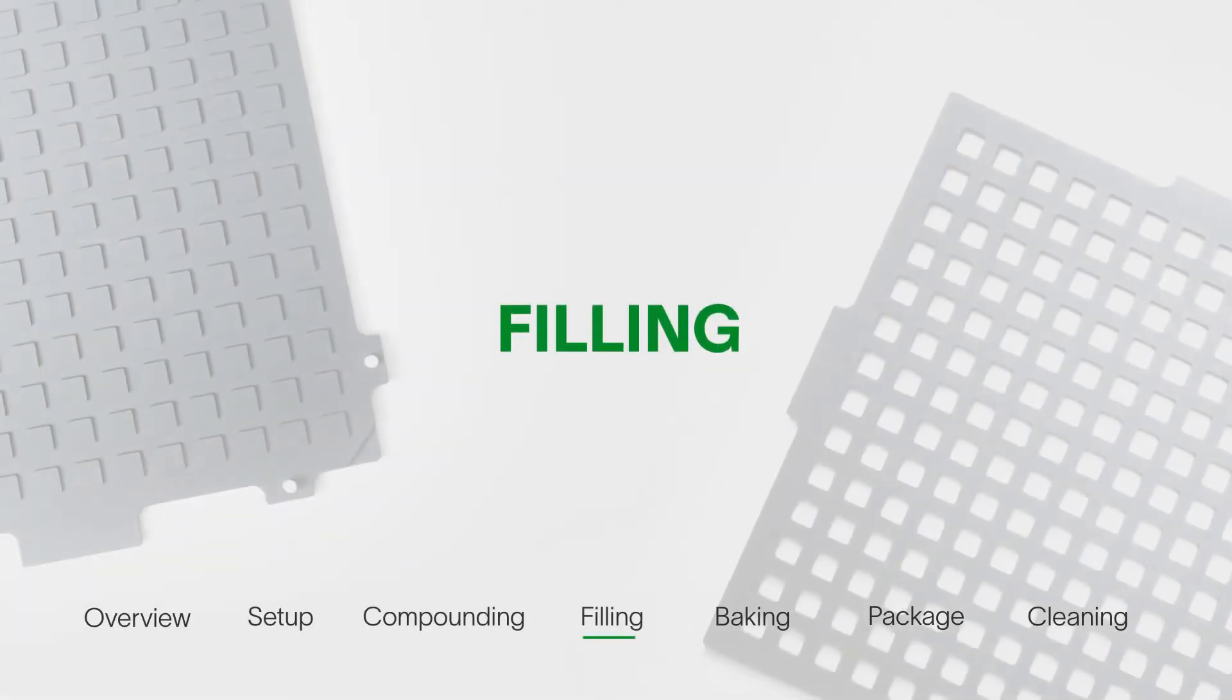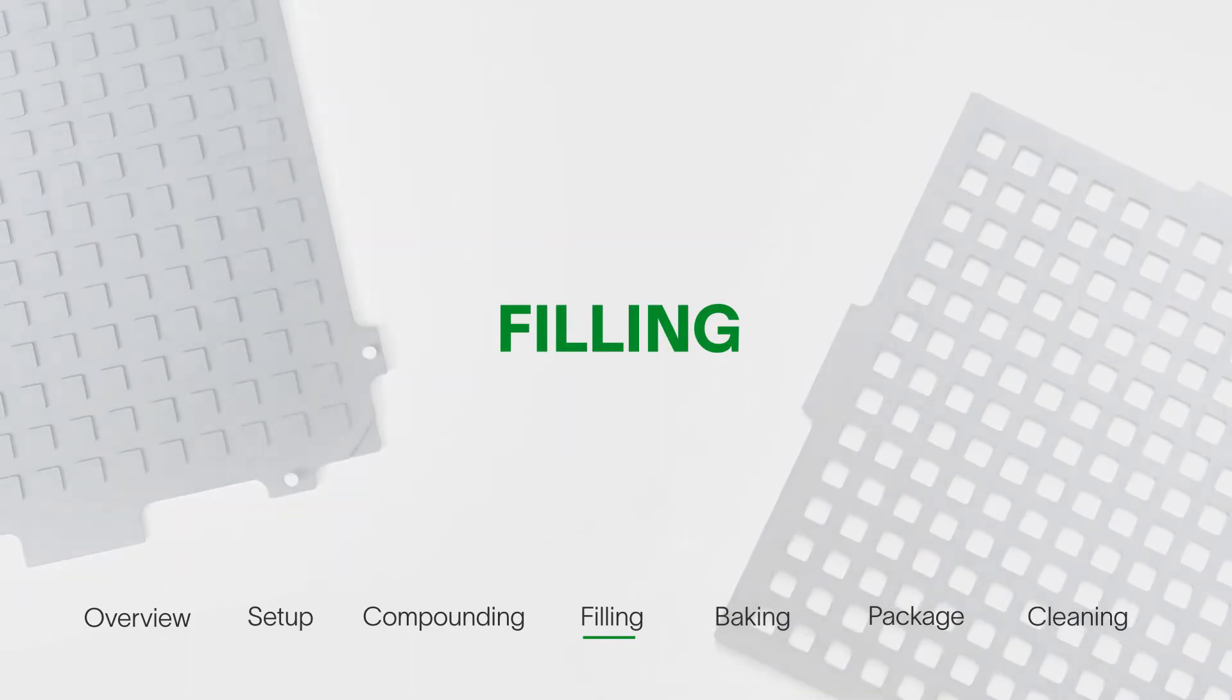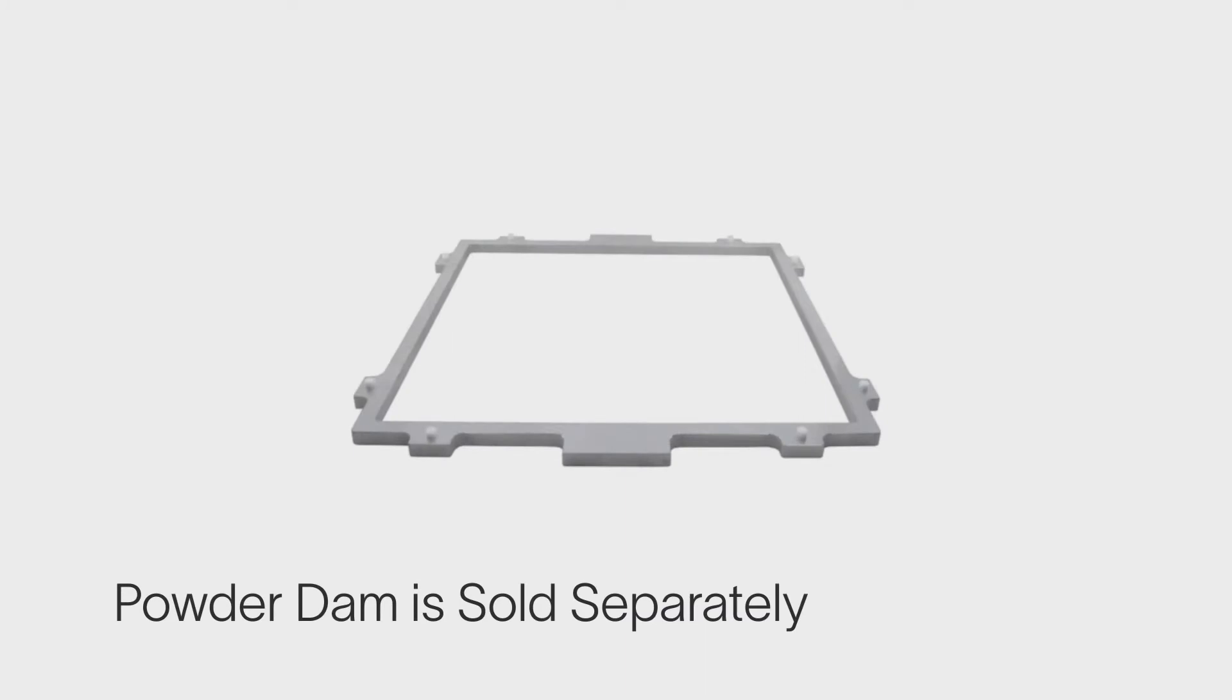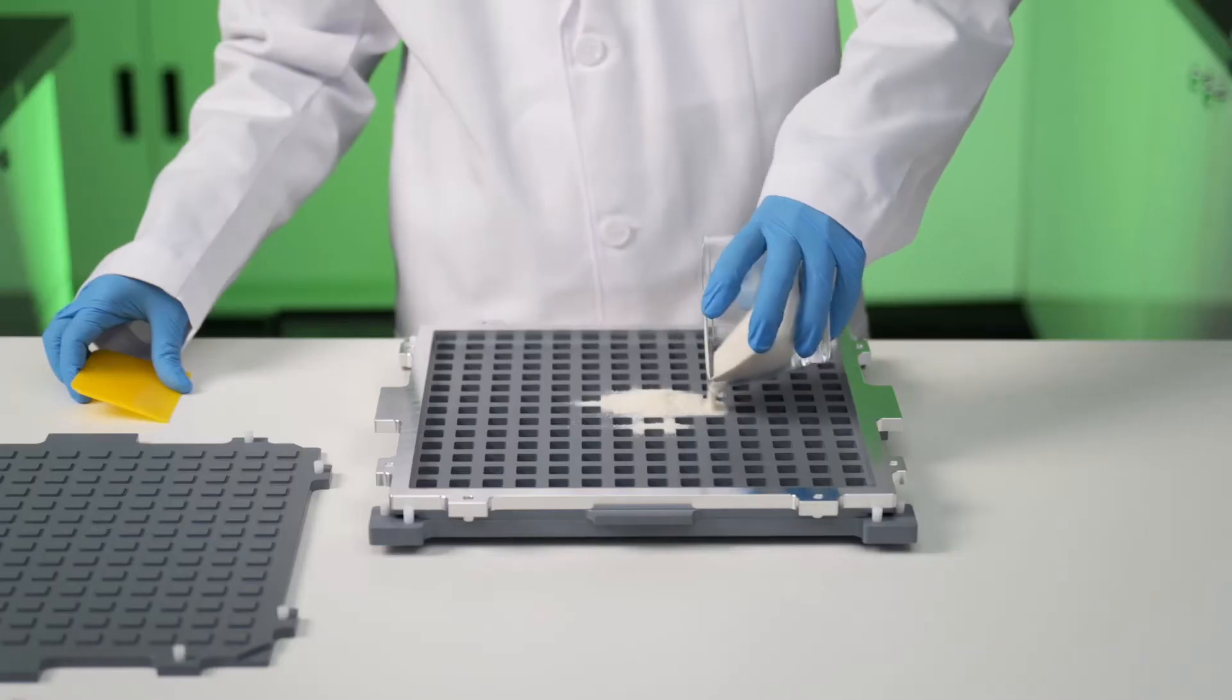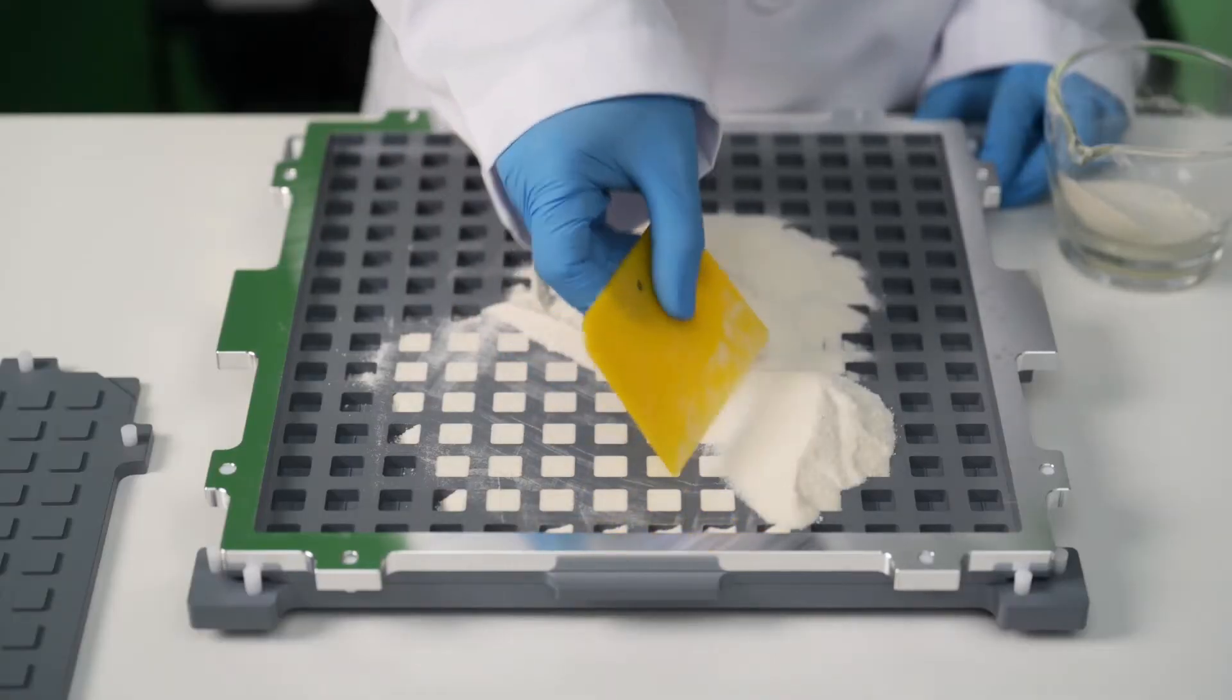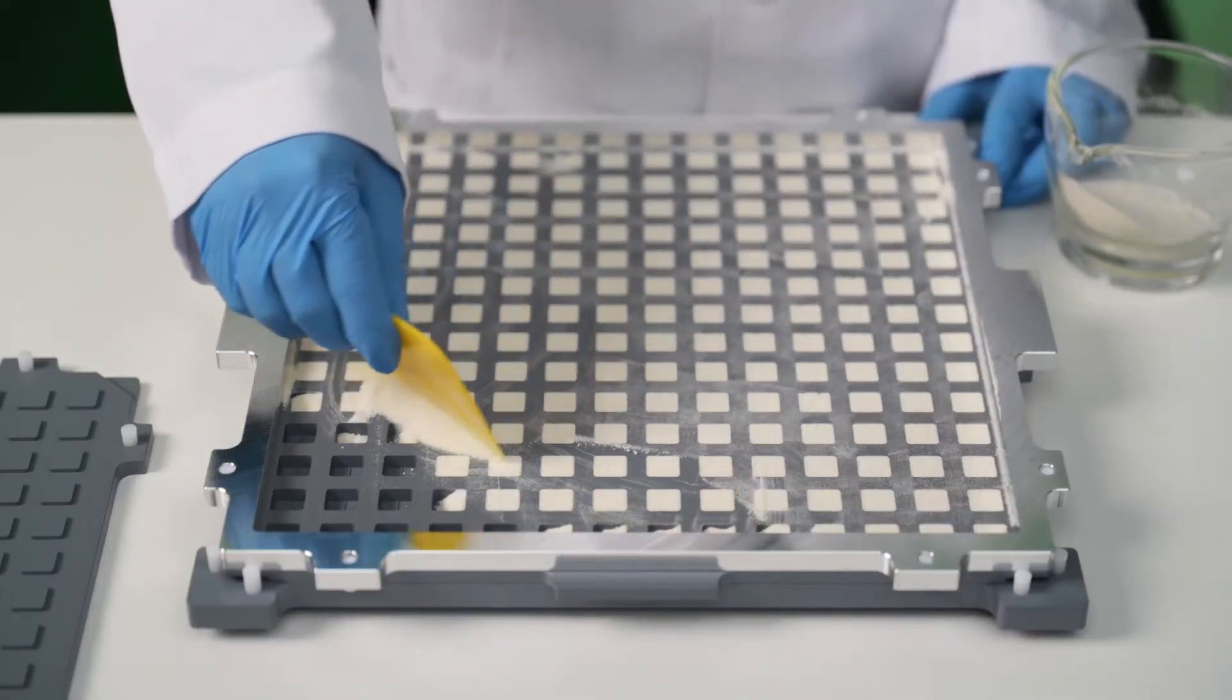Now it's time to fill the cavity mold once a homogeneous blend is achieved. Please note the powder dam is sold separately. Carefully pour the powdered blend into the cavity plate and use the scraper to spread the powder evenly around, filling the cavities as you go.